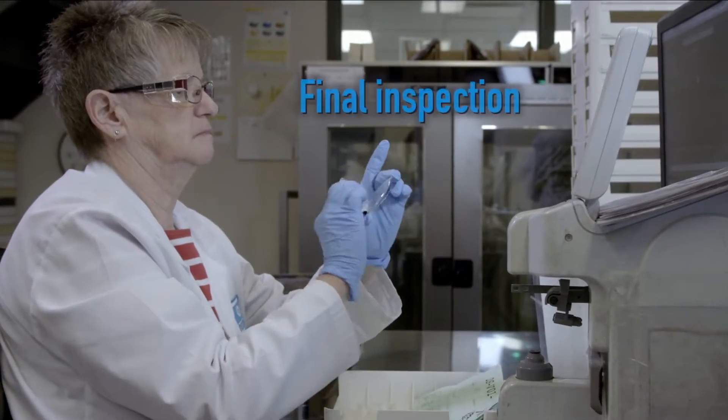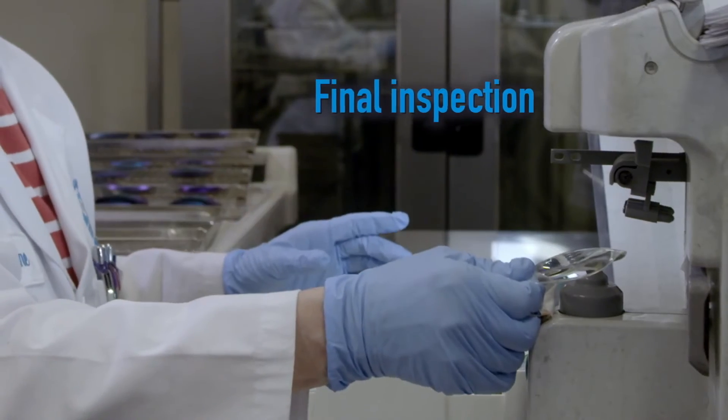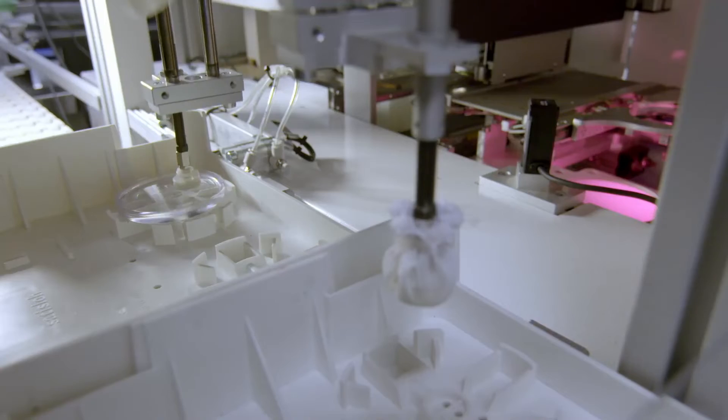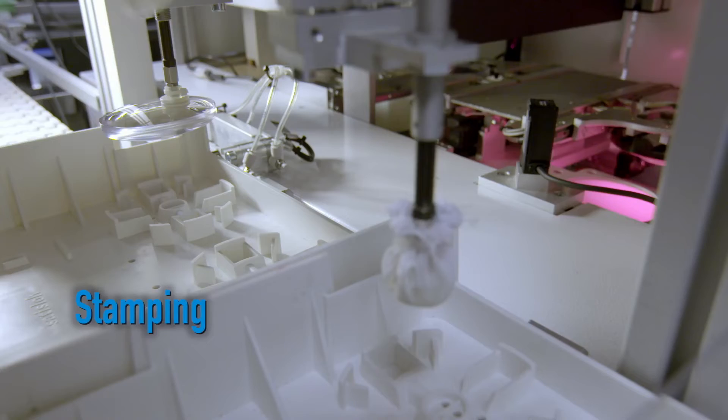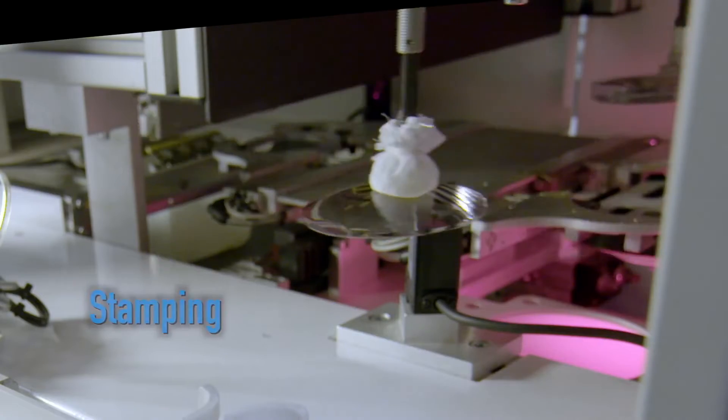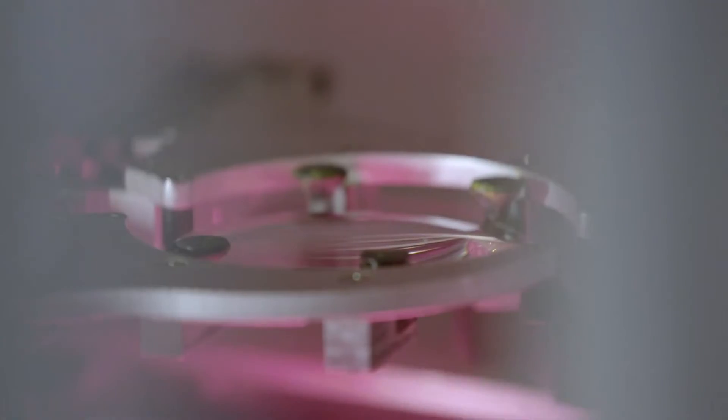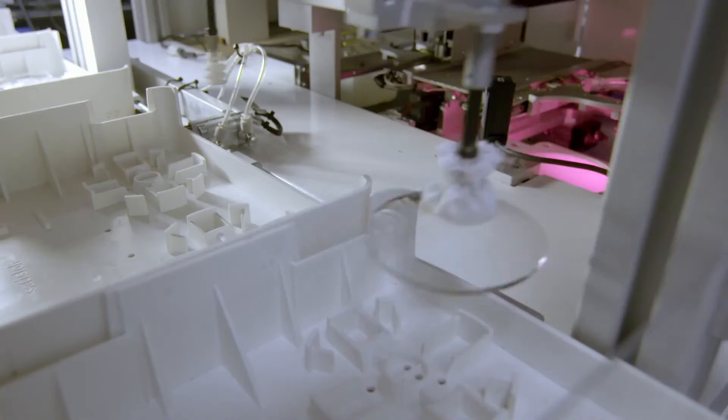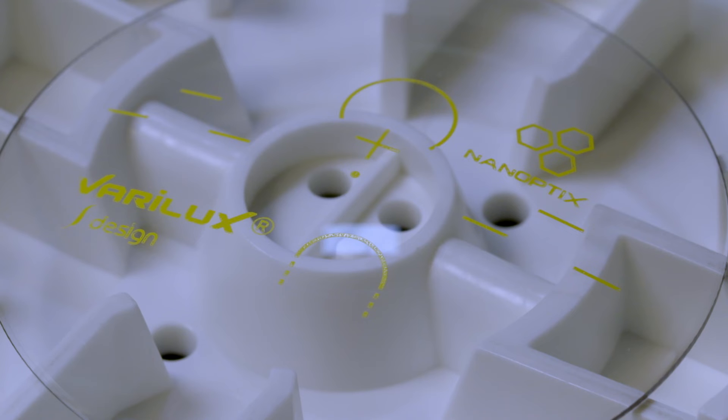An operator performs the final verification of the uncut lenses to ensure cosmetic compliance of the anti-reflective coating. A yellow marking, stamping, is applied on the front surface of the lenses depending on the design selected when placing the order. This marking allows to ensure that the lenses will be edged and adjusted according to the parameters of the patient and the frame.